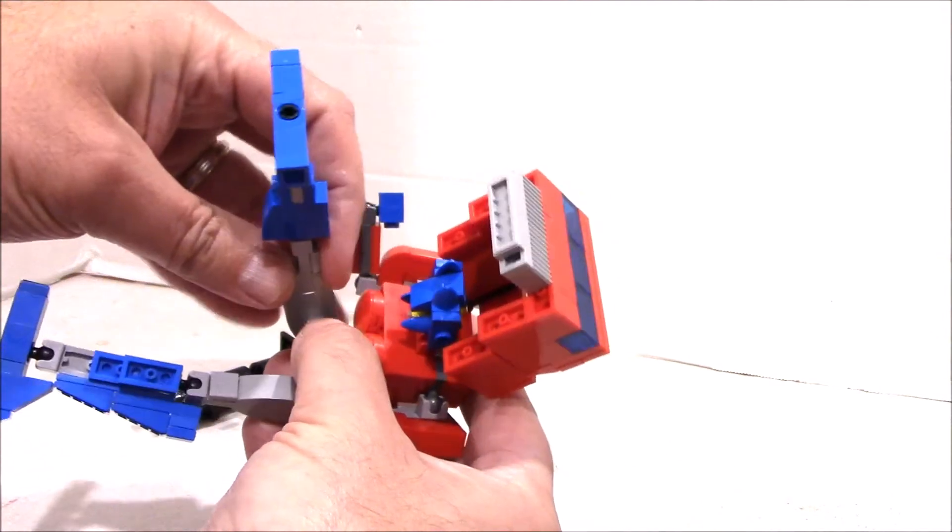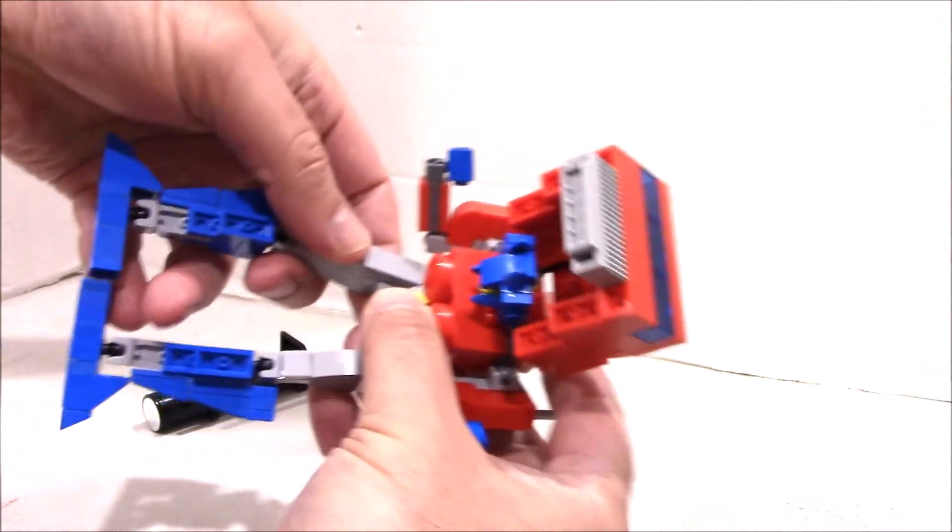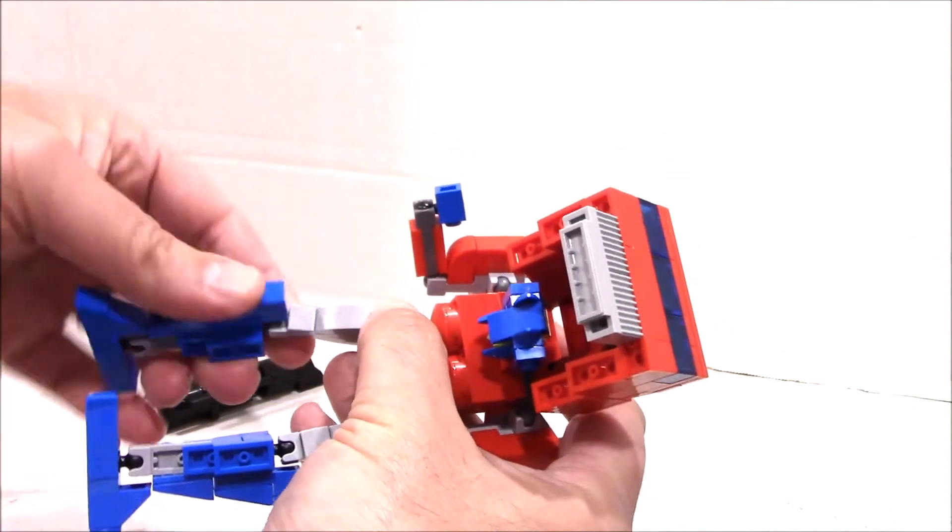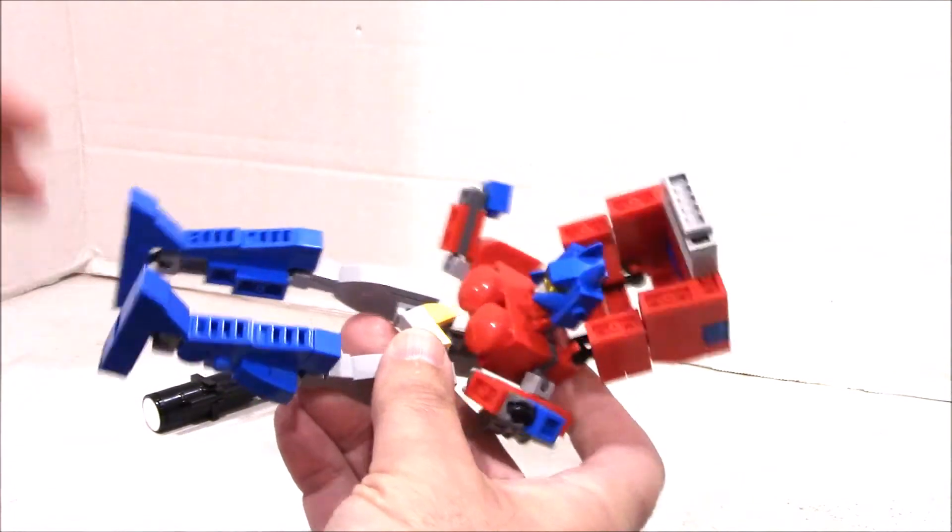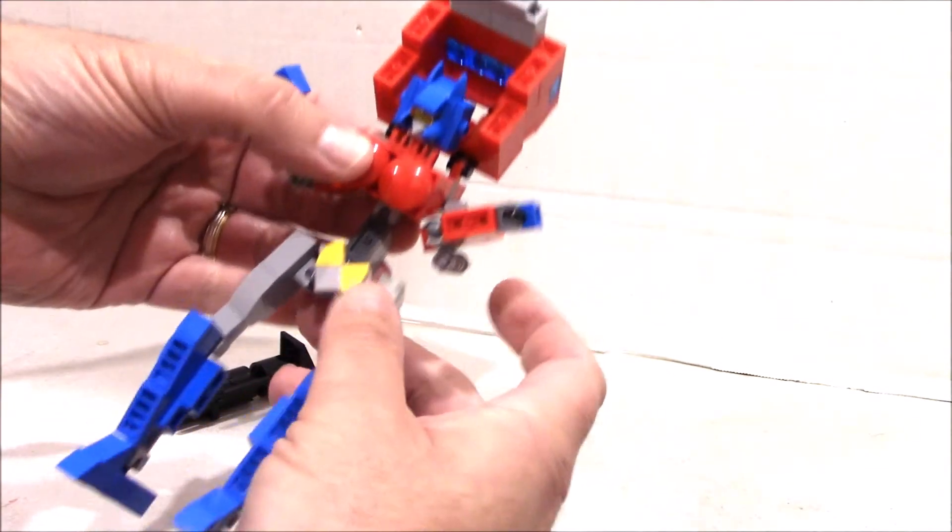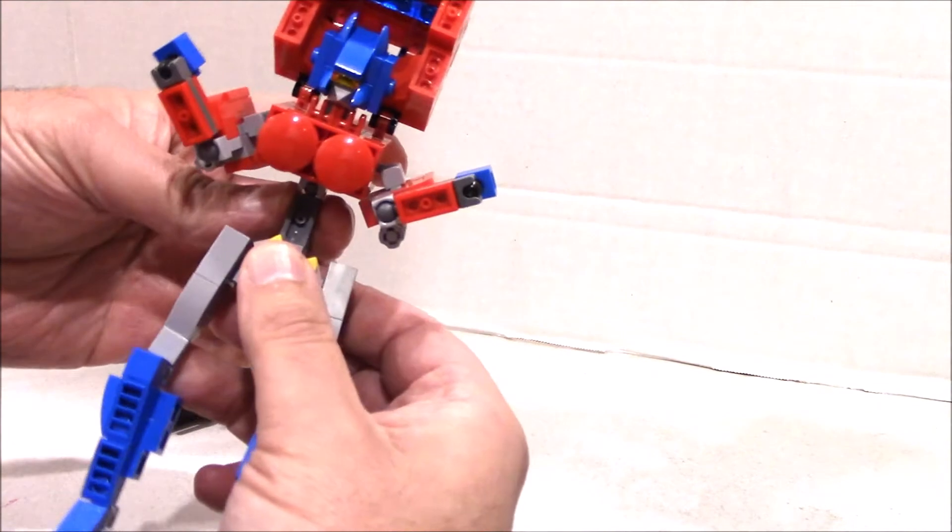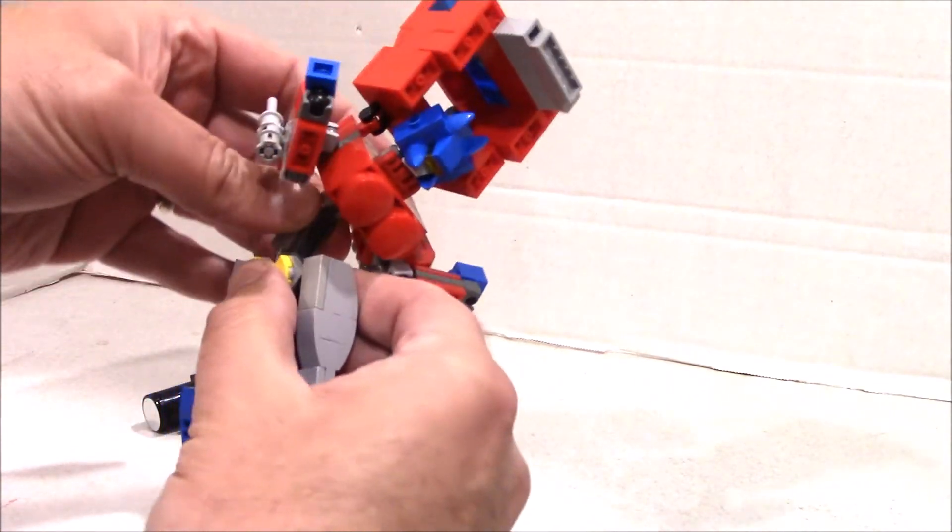Flip these units around which will become the legs - you can see where we're going already. Pull up the rest of the body and twist it around like so.